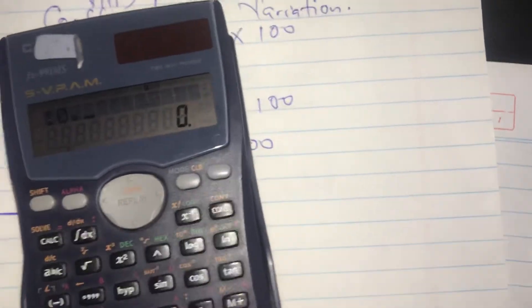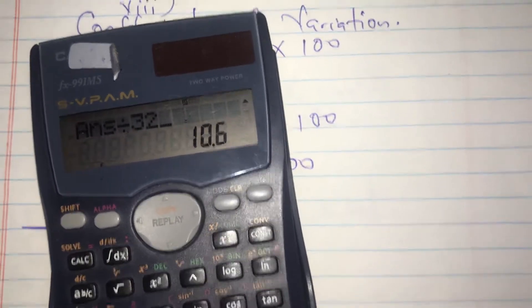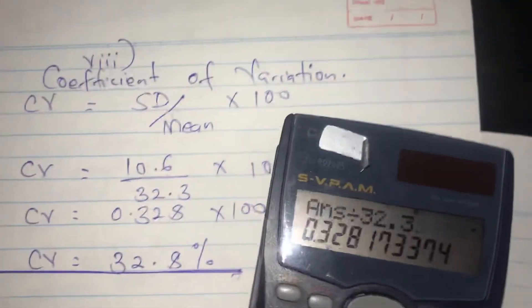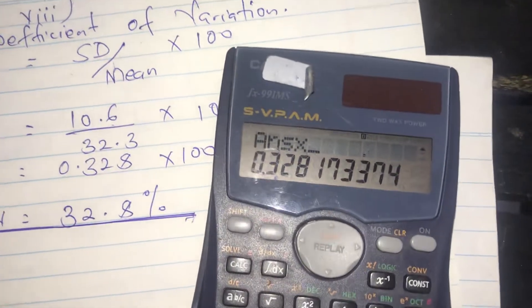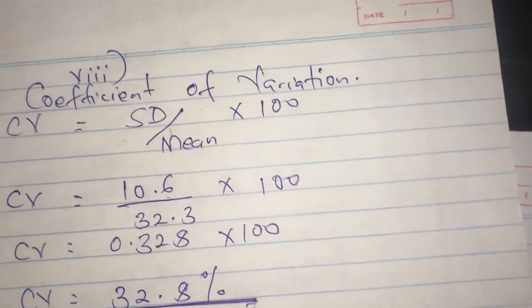Put it on the calculator: 10.6 divided by 32.3, which is 0.328, then we multiply by 100, which gives us 32.8.